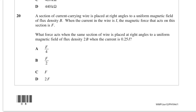A section of current carrying wire is placed at right angles to a uniform magnetic field of flux density B. When the current is I, the magnetic force that acts on this section is F. What's the force when the same section of wire is placed at right angles to a uniform field of 2B, when the current is I over 4? Remember force is BIL. We've timesed it by 2 but divided it by 4, so we should end up with F over 2.